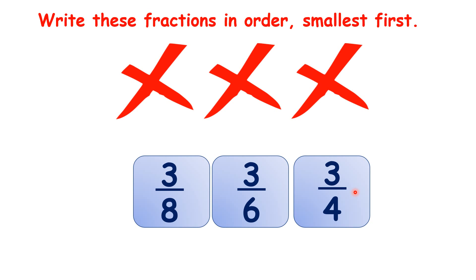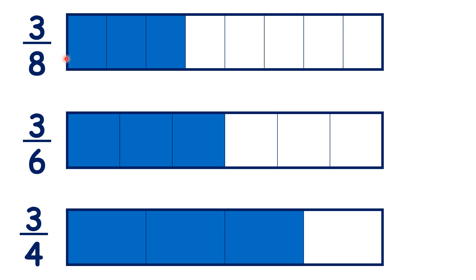When you're ordering fractions, it's useful to picture in your mind what each one looks like. So let's look at three-eighths, three-sixths, and three-quarters. You can see that even though we have three pieces — because three is the numerator for all of our fractions — the pieces are different sizes for each fraction. Because this top rectangle has been divided into more pieces, each piece is smaller. And because this bottom rectangle has not been divided into as many pieces, each piece is larger.